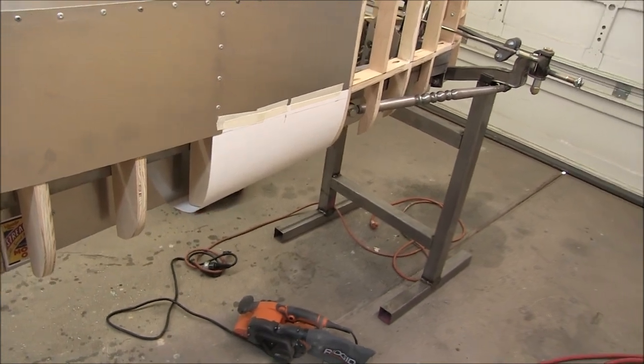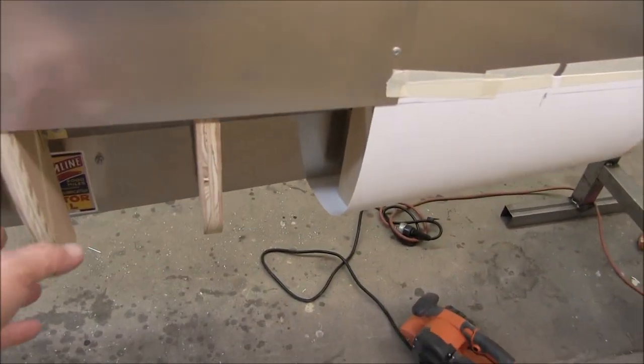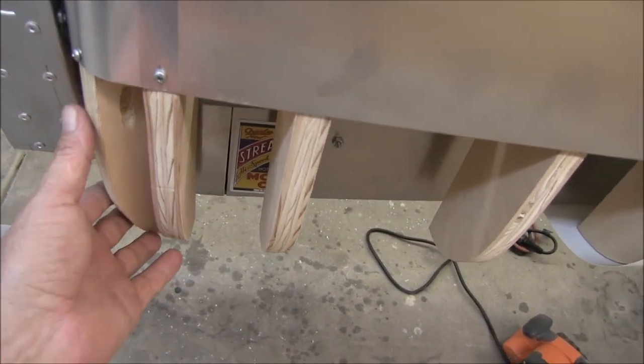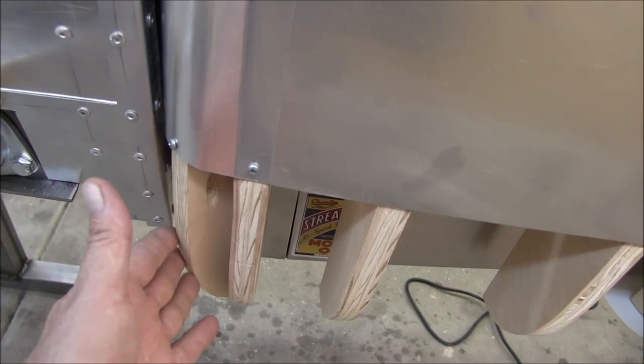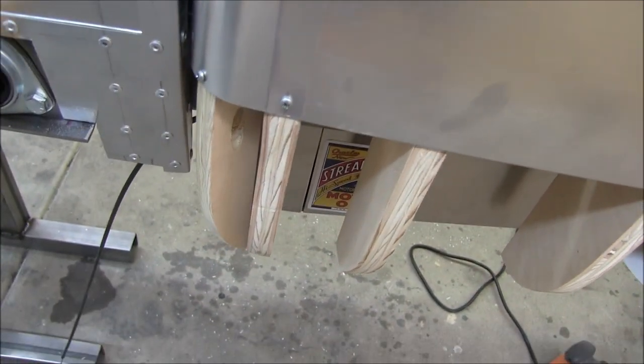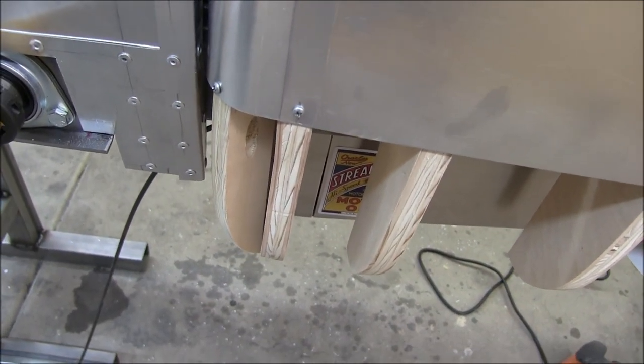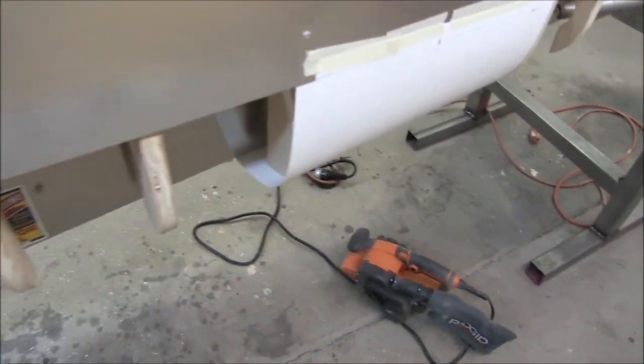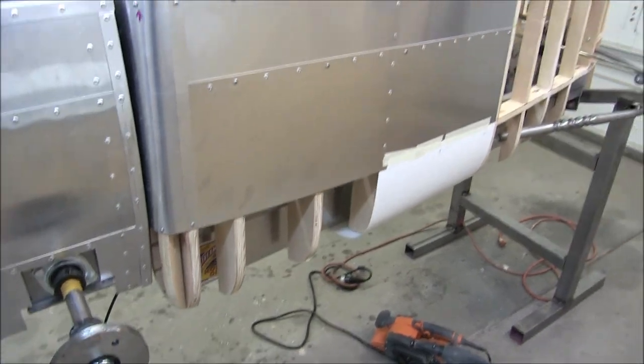Using poster board, I'm making the patterns for these two lower valances. Shouldn't be too hard. This corner will be a challenge because I'll have to form that with mallets on a sandbag I guess. Anyway, let's knock out these two easier ones, I don't worry about that corner when I get there.